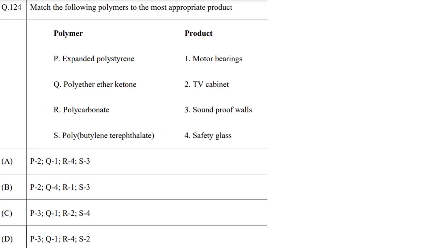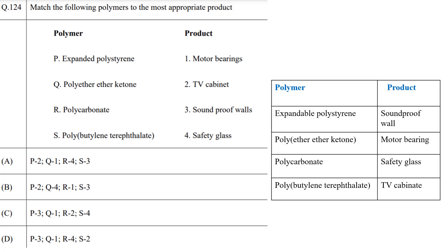In this question, match the polymer with its most appropriate product. Expandable polystyrene is used for soundproof walls due to its sound absorption properties. Polycarbonate is used for safety glasses due to its good optical properties. PEEK is used for motor bearings due to its light weight, strength, and high temperature stability. PBT is used to make TV cabinets due to structural stability and insulating properties. The correct answer is option D.